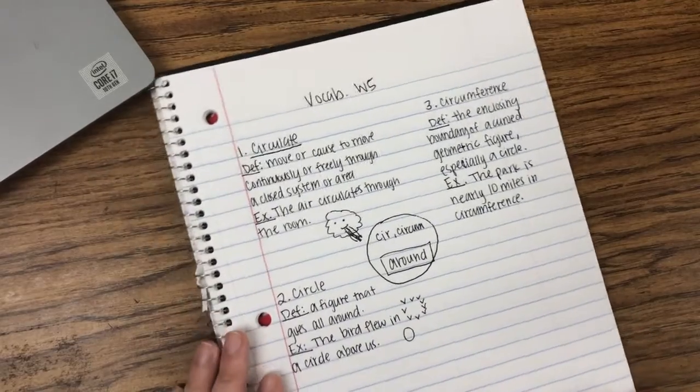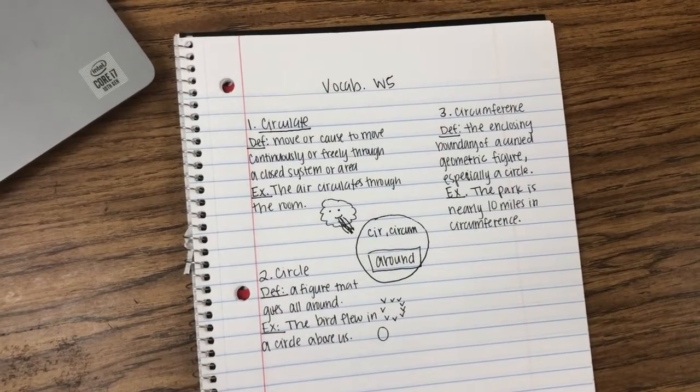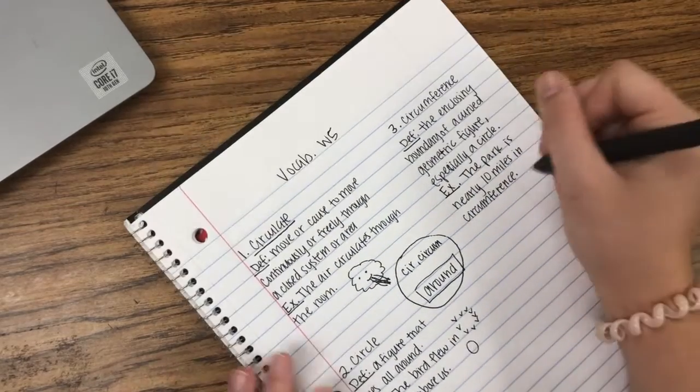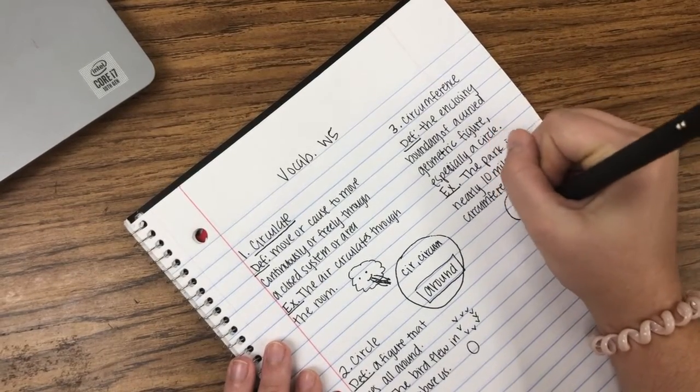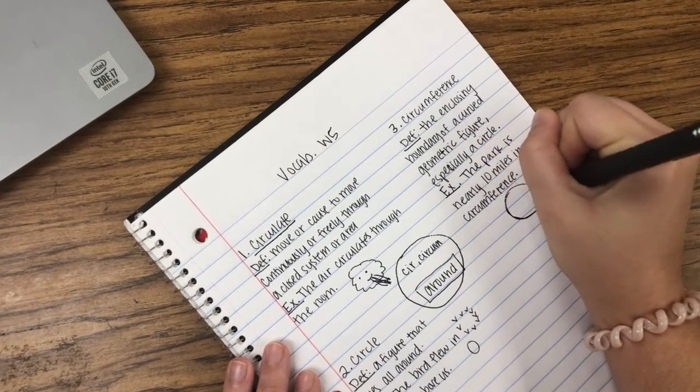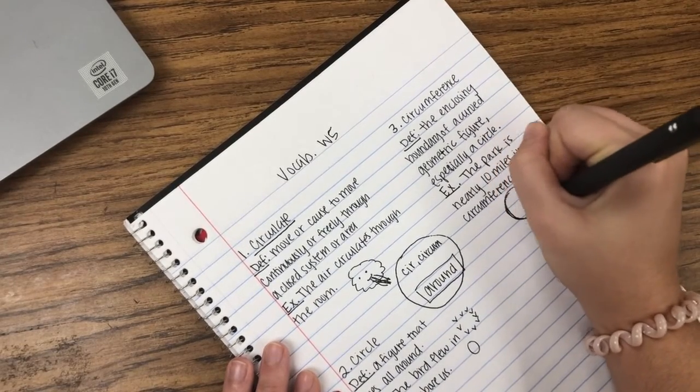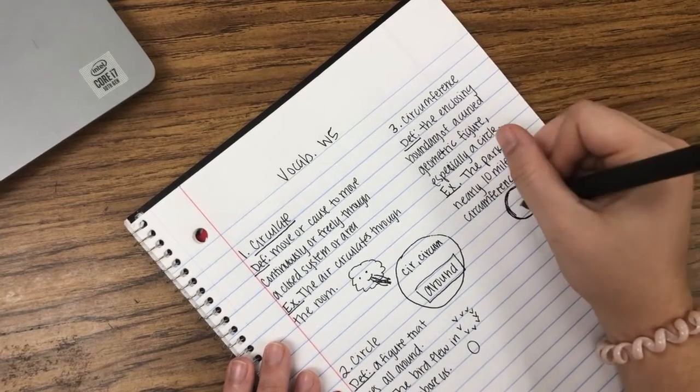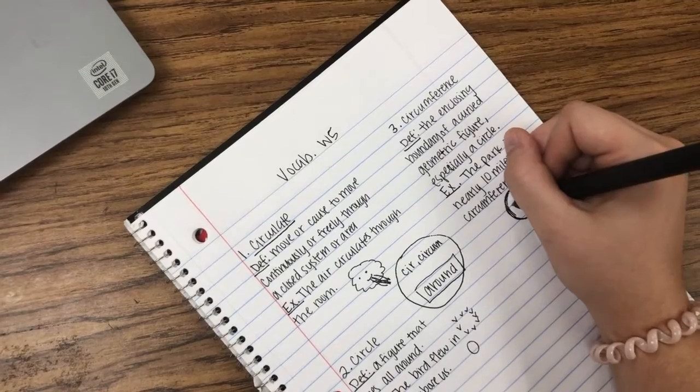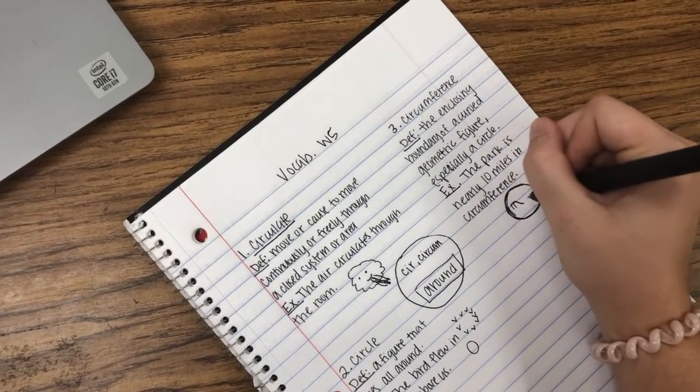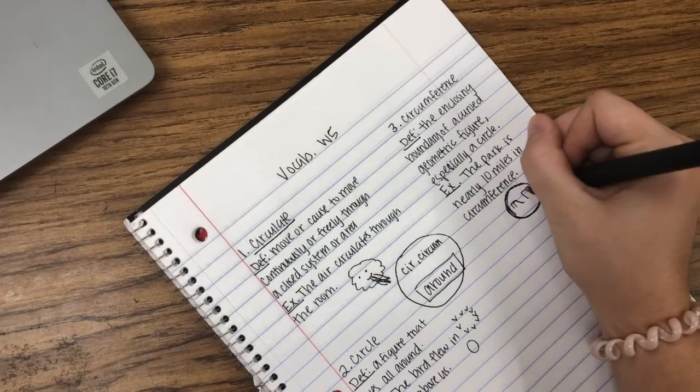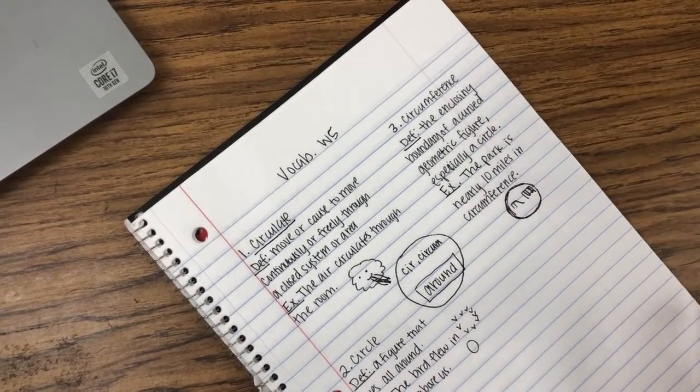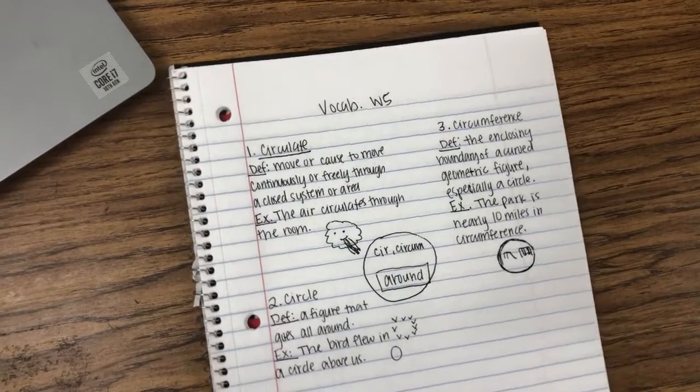And then the picture we're going to draw to help us remember this is, I was thinking we could draw a circle and really highlight the circle because that's the boundary. The circumference is the boundary of a curved geometric figure, right? And then we could draw a little park on the inside, so we can draw a little slide, we can draw some swing sets, so we remember the park was nearly 10 miles in circumference.